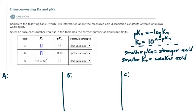Here's example two from the interconverting Ka and pKa topic. If you need more background and detail on how I'm approaching this example, please watch the first video. We have acid A here and we are given the pKa and asked to find the acid dissociation constant for this acid.